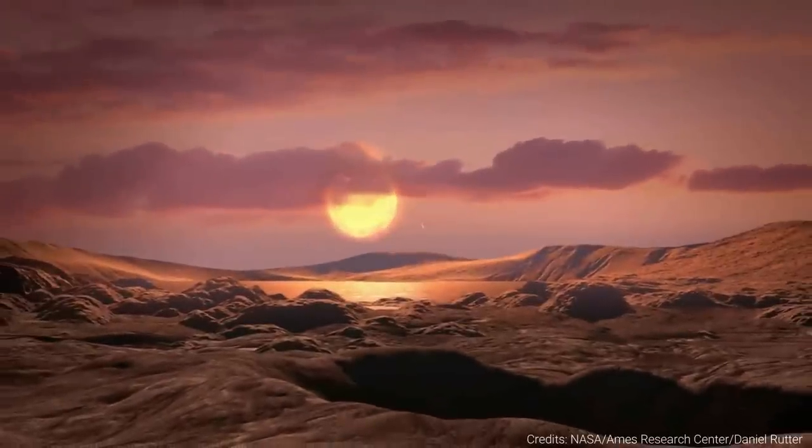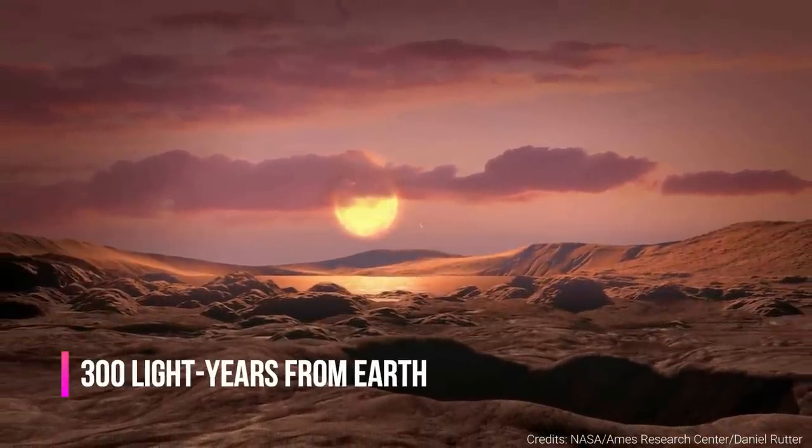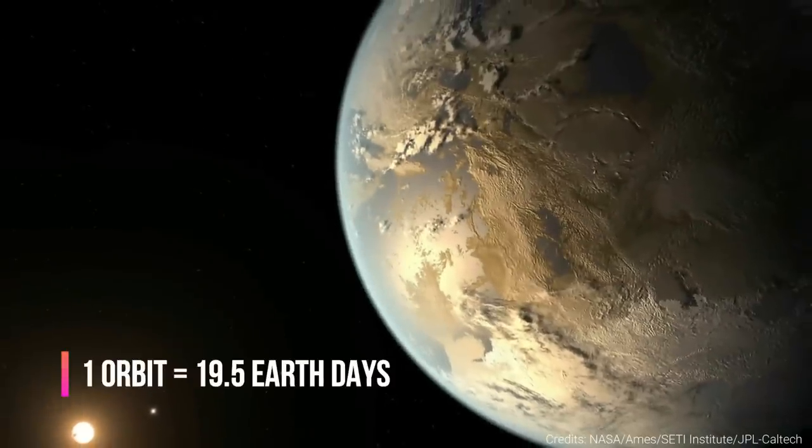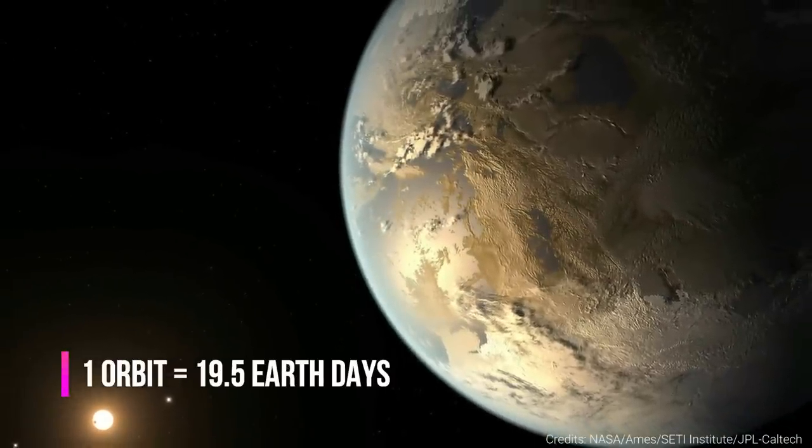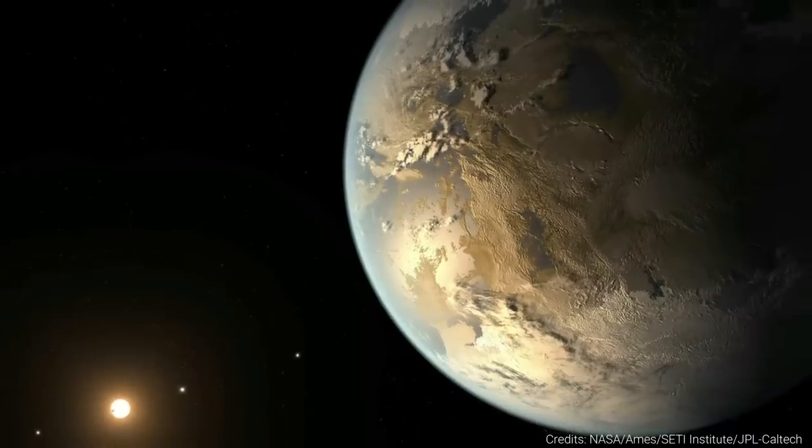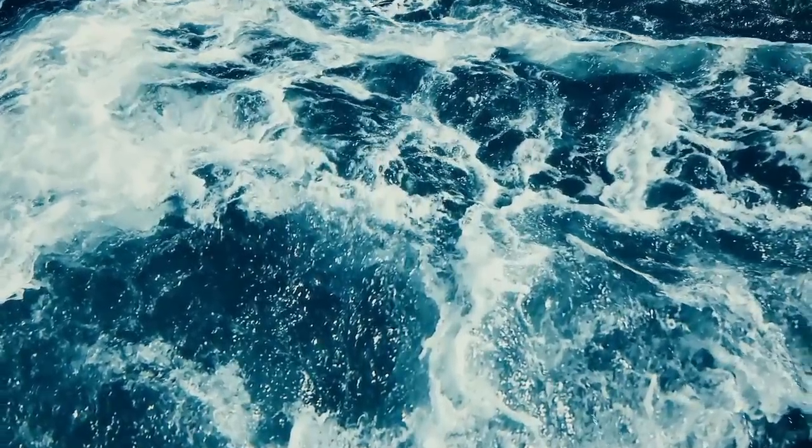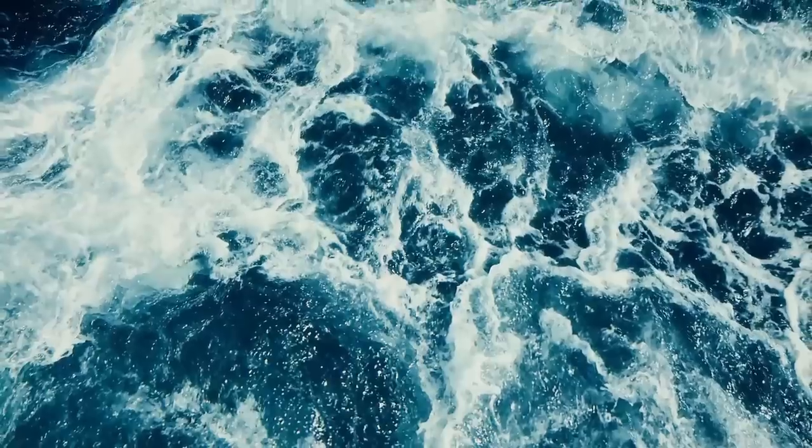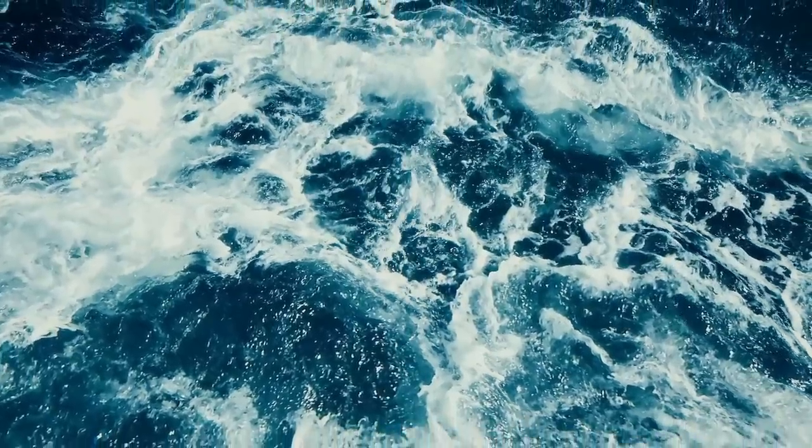The exoplanet that has been found circles a red dwarf star that lies 300 light years away from Earth, a new study reports. It completes one orbit every 19.5 Earth days, putting the alien planet in its host star's habitable zone, the just right range of distances where liquid water could exist on a world's surface. Because red dwarfs are so dim, their habitable zones lie quite close.